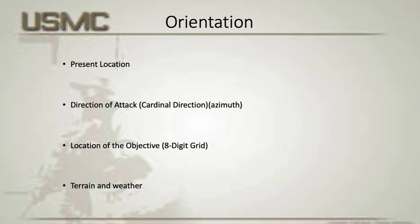Then we go to direction of attack. This can either be a cardinal direction — such as north, south, west, east, northwest — or it could be an azimuth, like 180 degrees. Either one is fine. If you are given a cardinal direction, you should use the cardinal direction, but 99% of the time you're going to be given a compass azimuth, a degree on the compass that you're supposed to follow. You'll say that once, then go on to location of the objective. It is also an eight-digit grid, and it also must be repeated twice. Do not just repeat it once — any grid number should be repeated twice so that people who are copying it can make sure they get the right numbers.